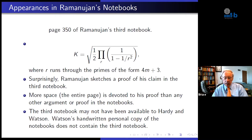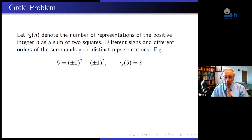This notebook might not have been available to Hardy and Watson. Watson made his own personal copy of the second notebook, but to the best of our knowledge he didn't make a copy of the third notebook. That's a matter of introduction to the circle problem. What I've given you so far is not the circle problem, but it indicates Ramanujan's interest in sums of squares. We'll let r₂(n) be the number of representations of the positive integer n as a sum of two squares. We count different signs and different orders as distinct.